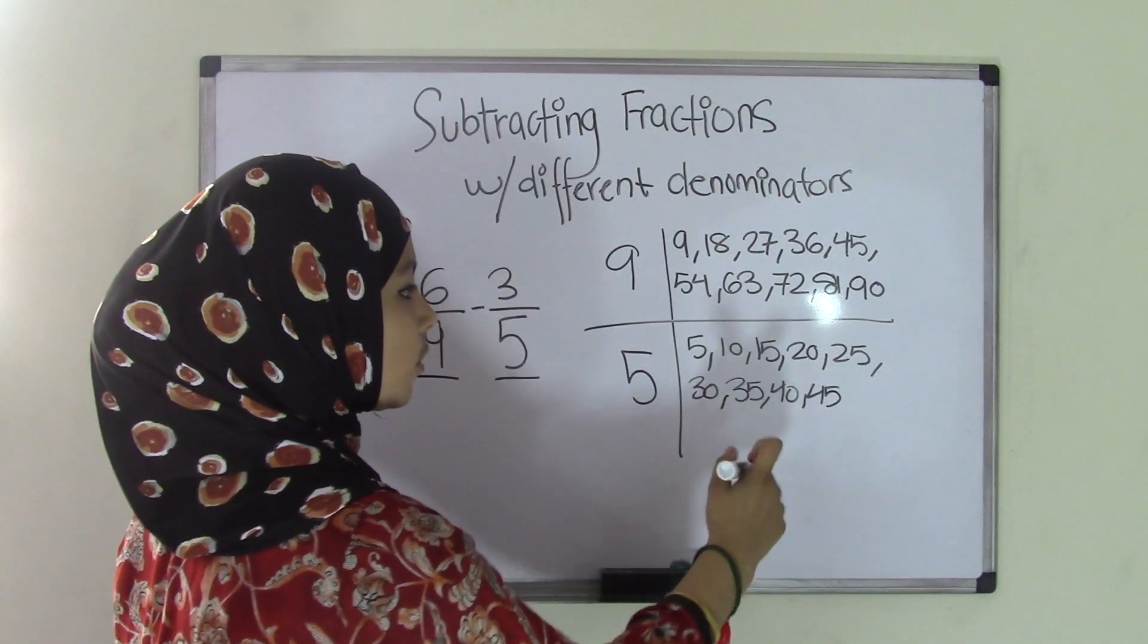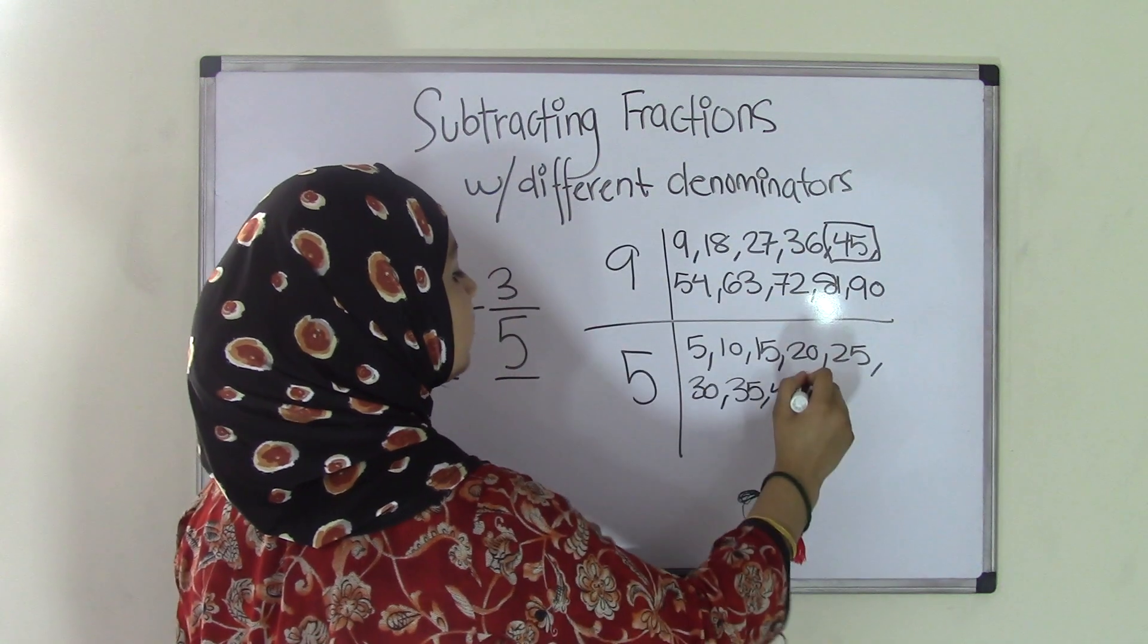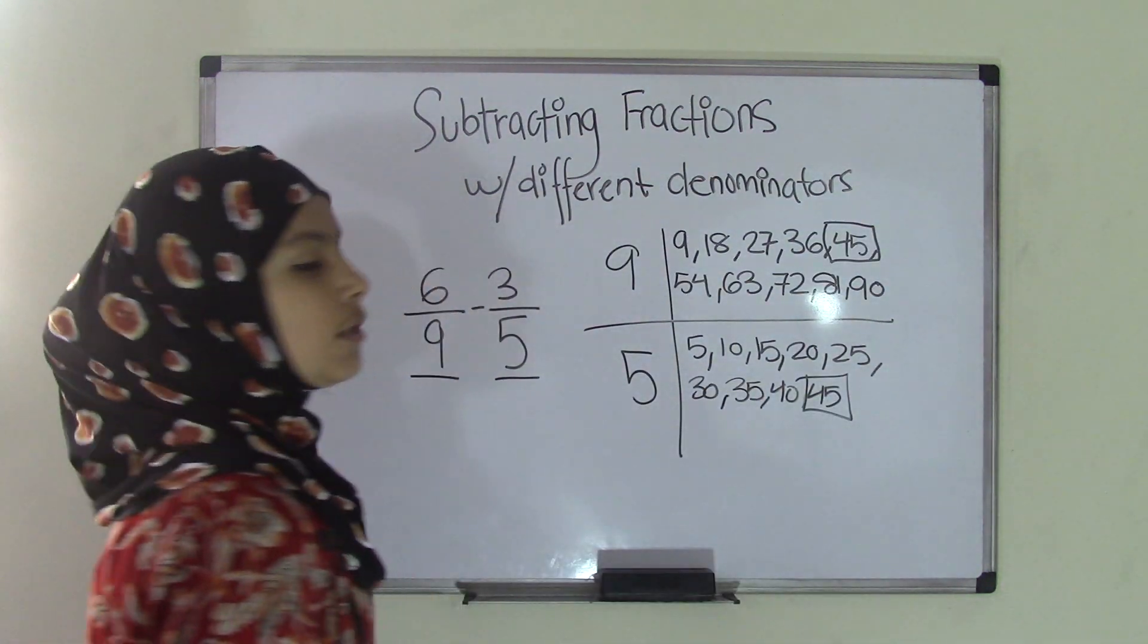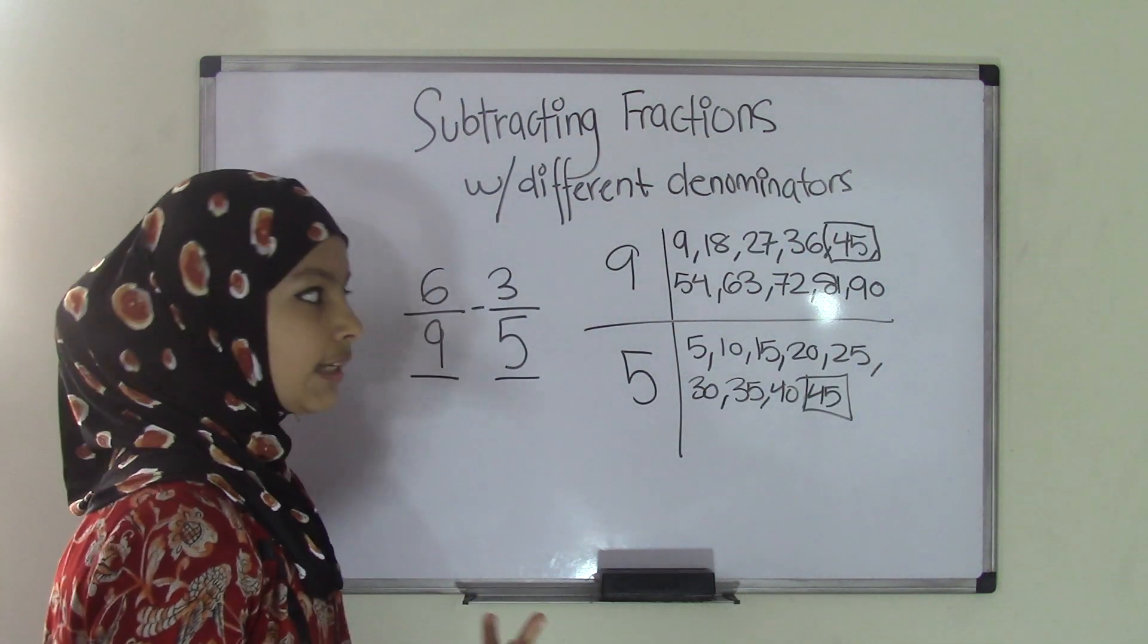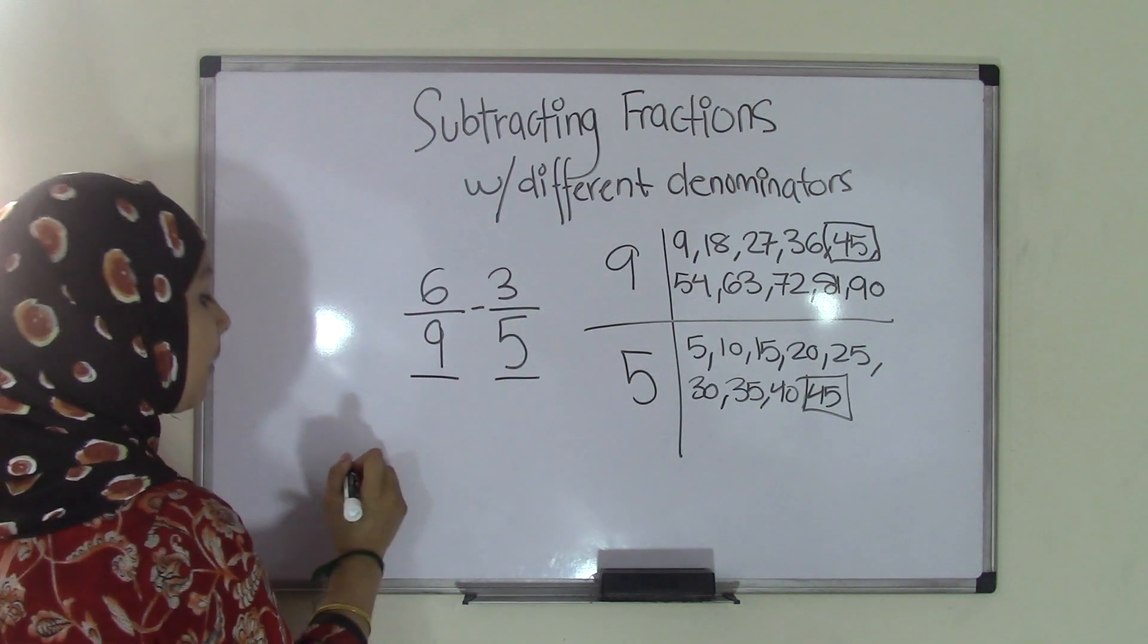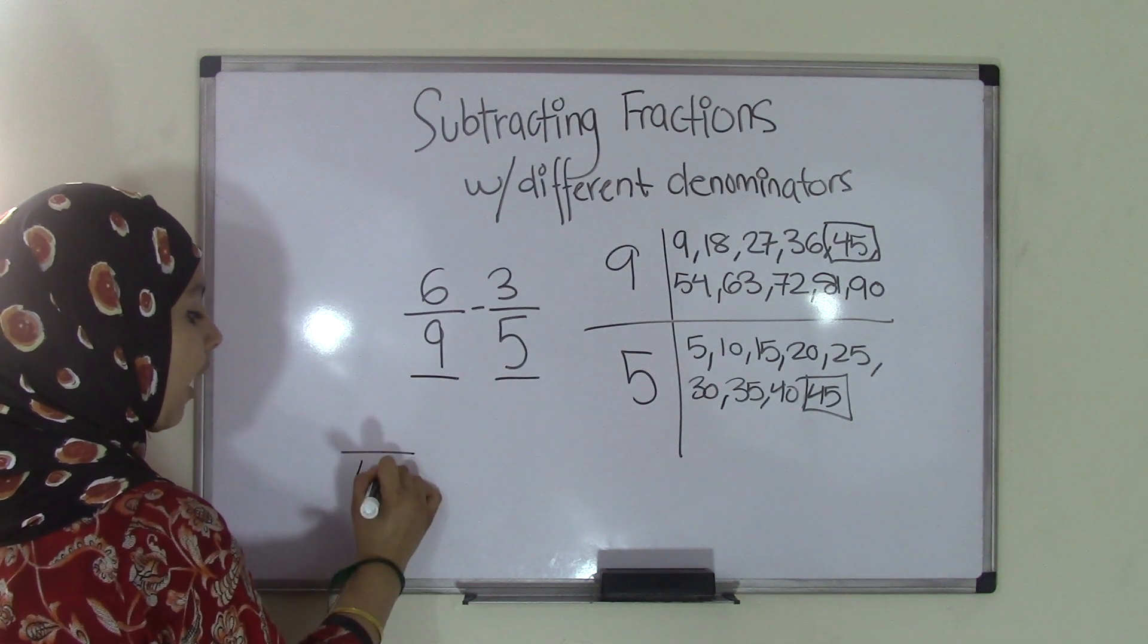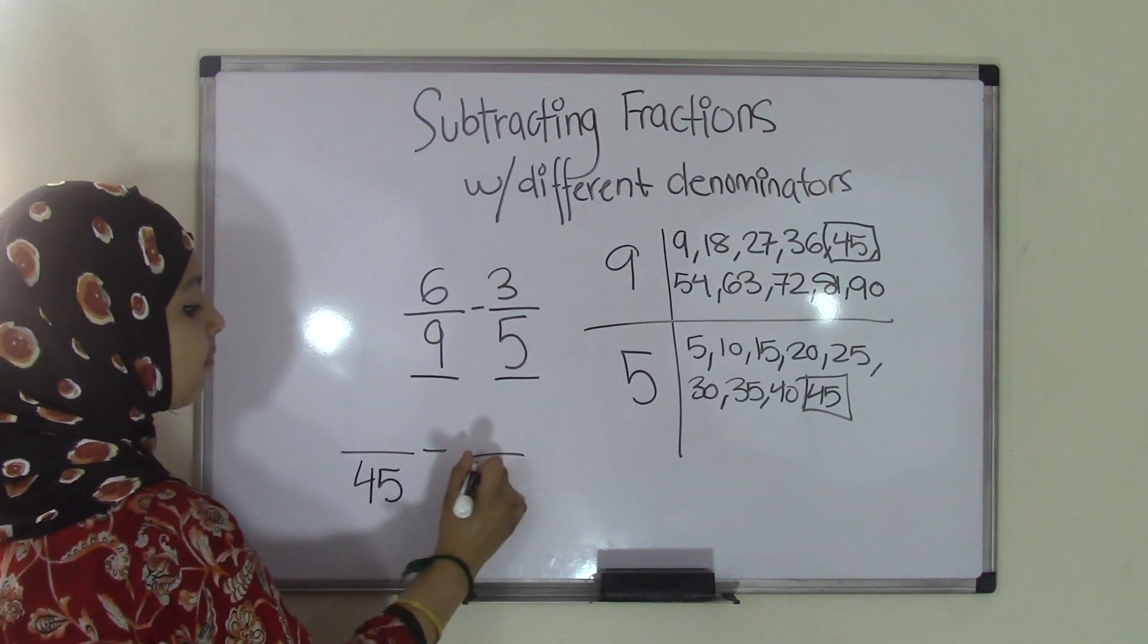Now as you can see, I've stopped here because I found 9 times 5 is 45, and 5 times 9 is 45. So that's pretty much my common or my least common multiple there. What I'm going to do is come over here back to our problem, and I'm going to write two denominators of 45. So 45 minus 45.